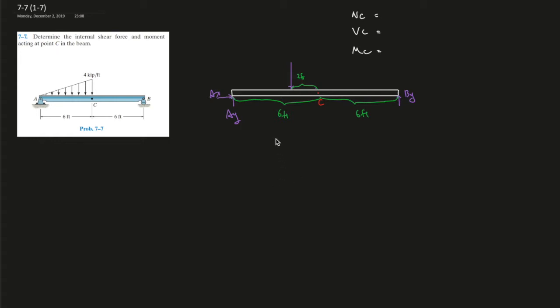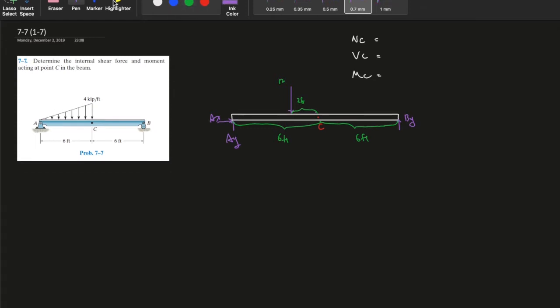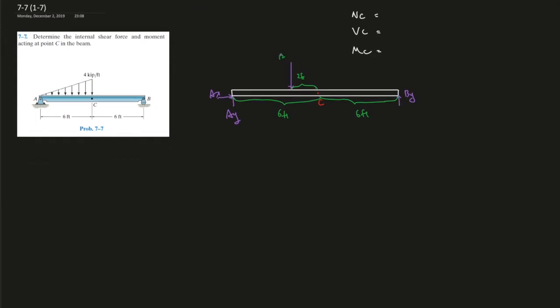So step one is always find the global equilibrium, right? We simplify the force distribution over here, 4 times 6 divided by 2, that gives us 12. Oops, wrong color. So this is 12 kip over here.